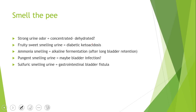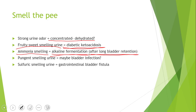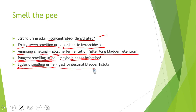If urine smells fruity or sweet, think diabetic ketoacidosis — sugar in the urine. If it smells like ammonia, that's probably from alkaline fermentation after long bladder retention. A pungent strong smell could be a bladder infection. Sulfur-smelling urine suggests a gastrointestinal-bladder fistula, meaning fecal matter and urine are essentially mixing.